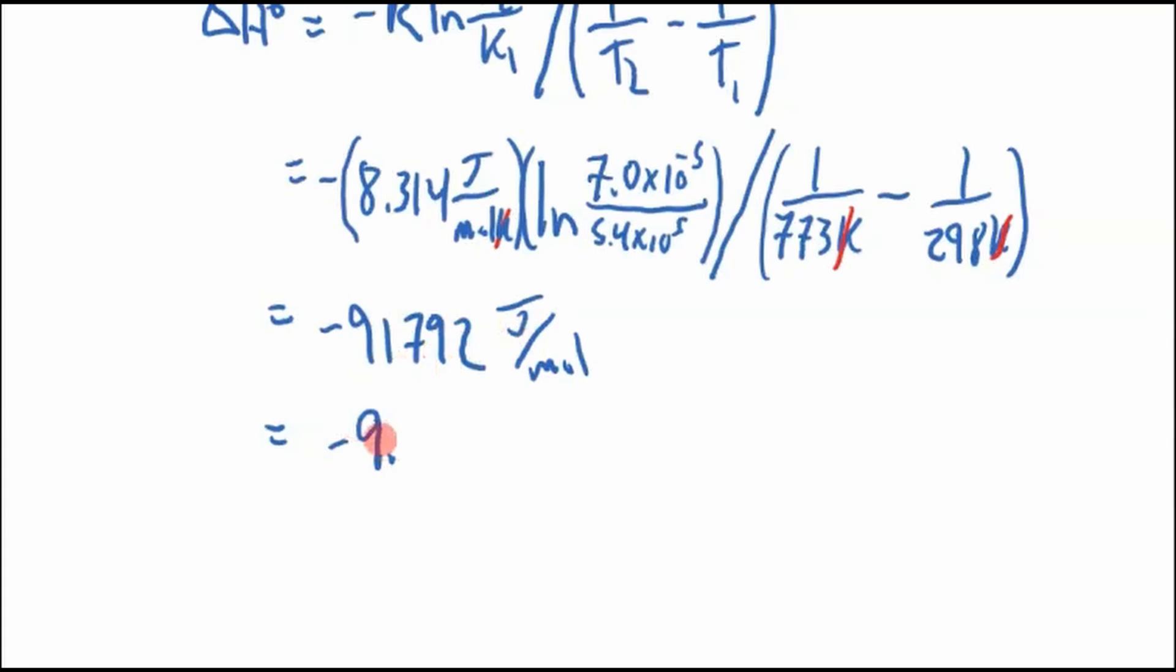So we'll say negative 91, how many sig figs do we have? We have 4 here, 2 here, but we've got to look at the number of decimal places. We'll leave it in 3 sig figs. I think we're okay with that, negative 91.8 kilojoules per mole. Let me know if that's horribly wrong.